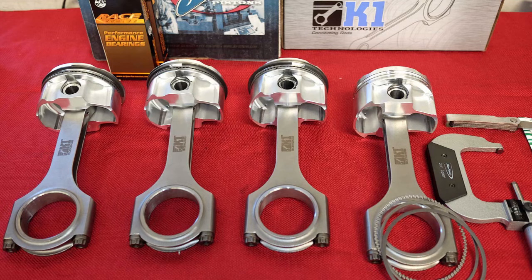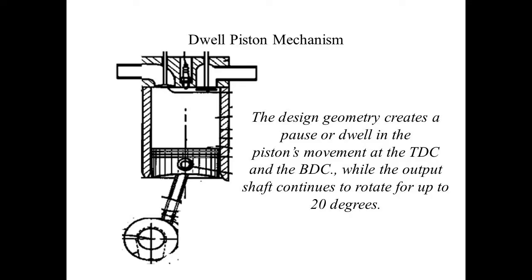What that means is that an engine with that rod stroke ratio is more suitable to revving to higher RPMs from an engineering point of view. Having a longer rod stroke ratio will help breathing at higher RPMs, so that equates to more power up top.